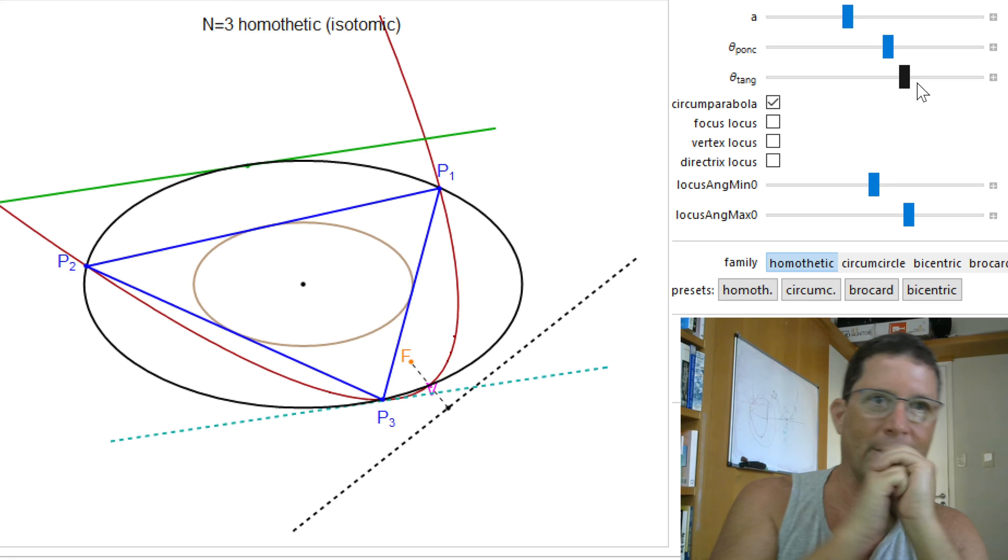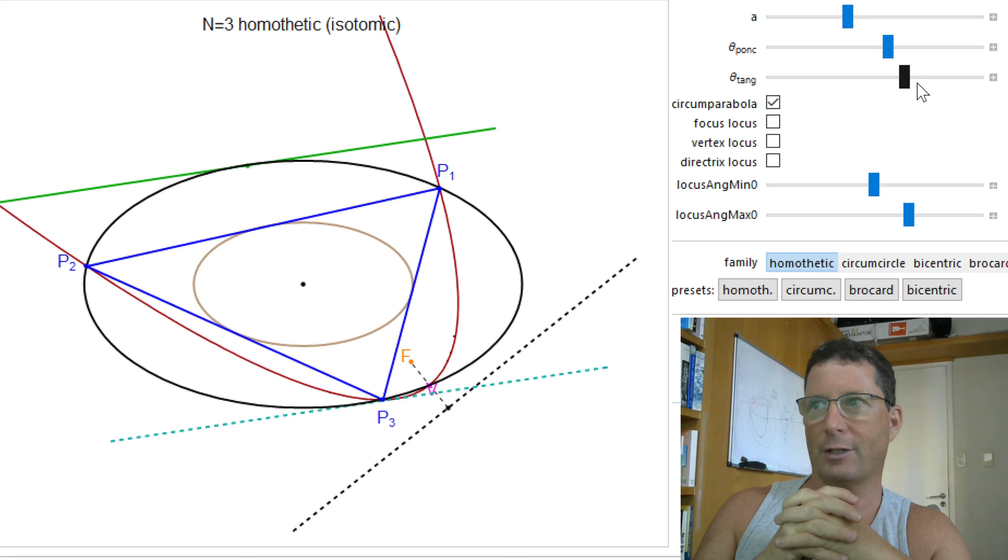Draw its Steiner, and then sweep all the tangents and compute the isotomic, not the isogonal, the isotomic image of those tangents. OK, now this is not the main topic here. The main topic is the following.